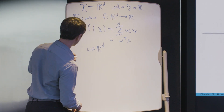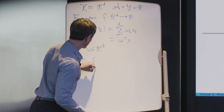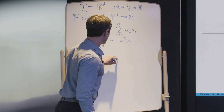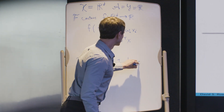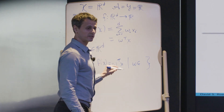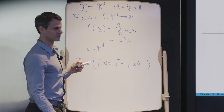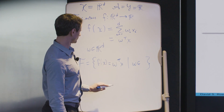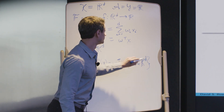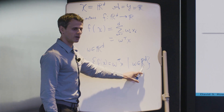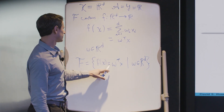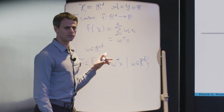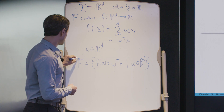The full hypothesis space F is the set of functions of the form f(x) equals w transpose x, where every vector w in R^D corresponds to a linear function. So for every w in R^D, we get a function that takes x and maps it to w transpose x — the inner product of w and x. That's our hypothesis space F.